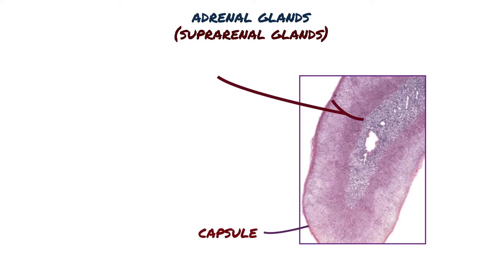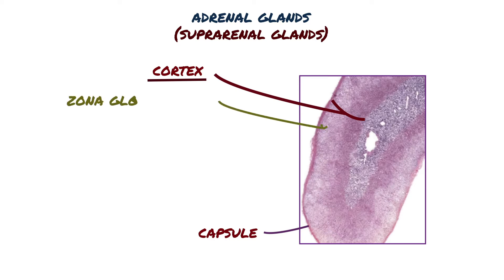The cortex is the large outer region of the adrenal gland. The adrenal cortex has three concentric zones in which the cords of epithelial steroid-producing cells are arranged somewhat differently and which synthesize different classes of steroid hormones. The first zone is the zona glomerulosa.